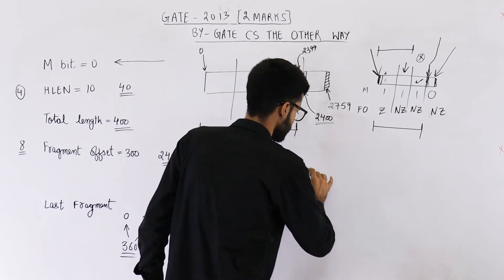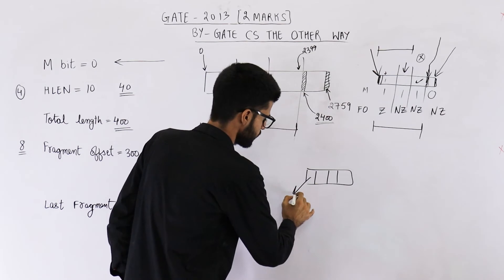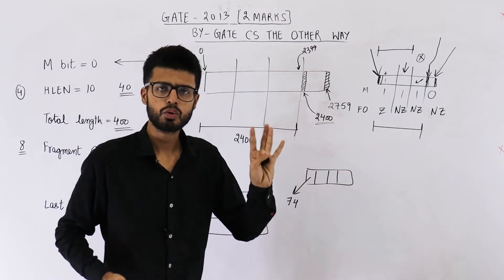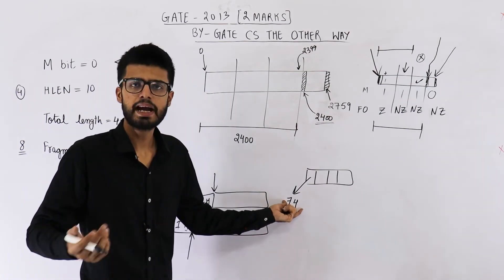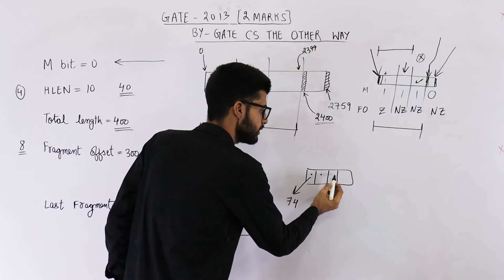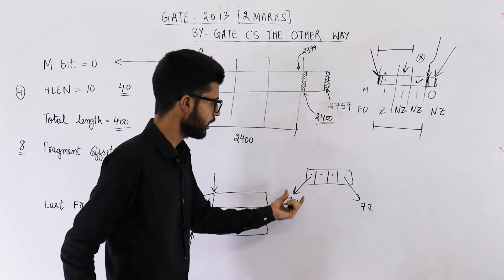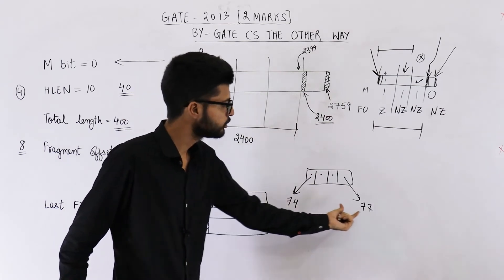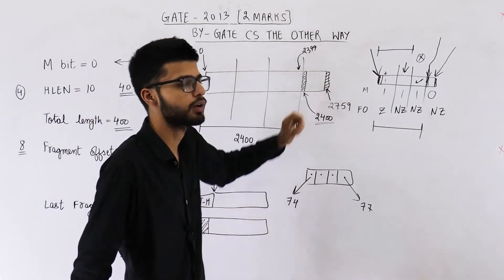Now for the last byte number, we use total length. Total length for this fragment is 400, out of which 40 bytes is the header. So data = 400 − 40 = 360 bytes. Since the first byte is 2400, the last byte will be 2400 + 360 − 1 = 2759. We subtract 1 because numbering is zero-based within that range. For example, if the first byte is 74 and you have 4 bytes, the last byte is 74 + 4 − 1 = 77, not 78.